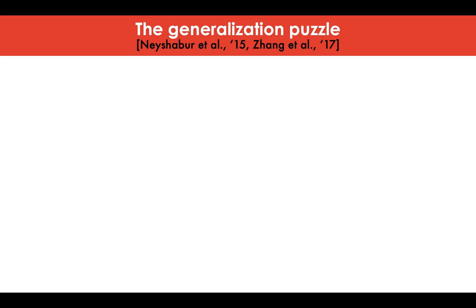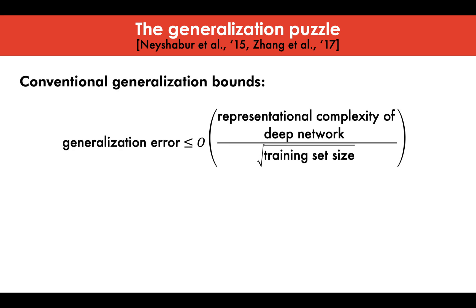So what do these papers say? Mathematically speaking, conventional bounds on the generalization gap, like the VC dimension, cannot explain this generalization puzzle as these bounds estimate the representational complexity of the network by its parameter count, hence yielding vacuous generalization bounds.